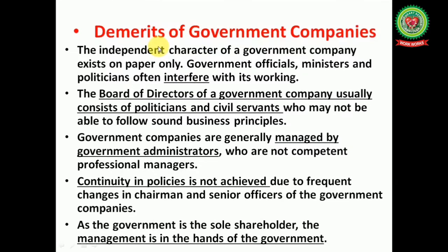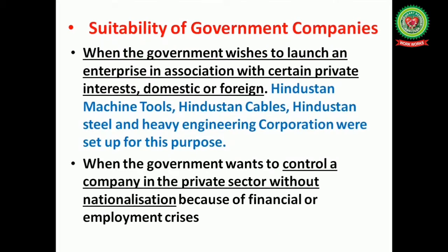The demerits of government companies: the independent character of a government company exists on paper only — government officials, ministers and politicians often interfere with its working. The board of directors usually consists of politicians and civil servants who may not be able to follow sound business principles. These companies are generally managed by government administrators who are not competent professional managers. Continuity in policies is not achieved due to frequent changes in chairman and senior officers.